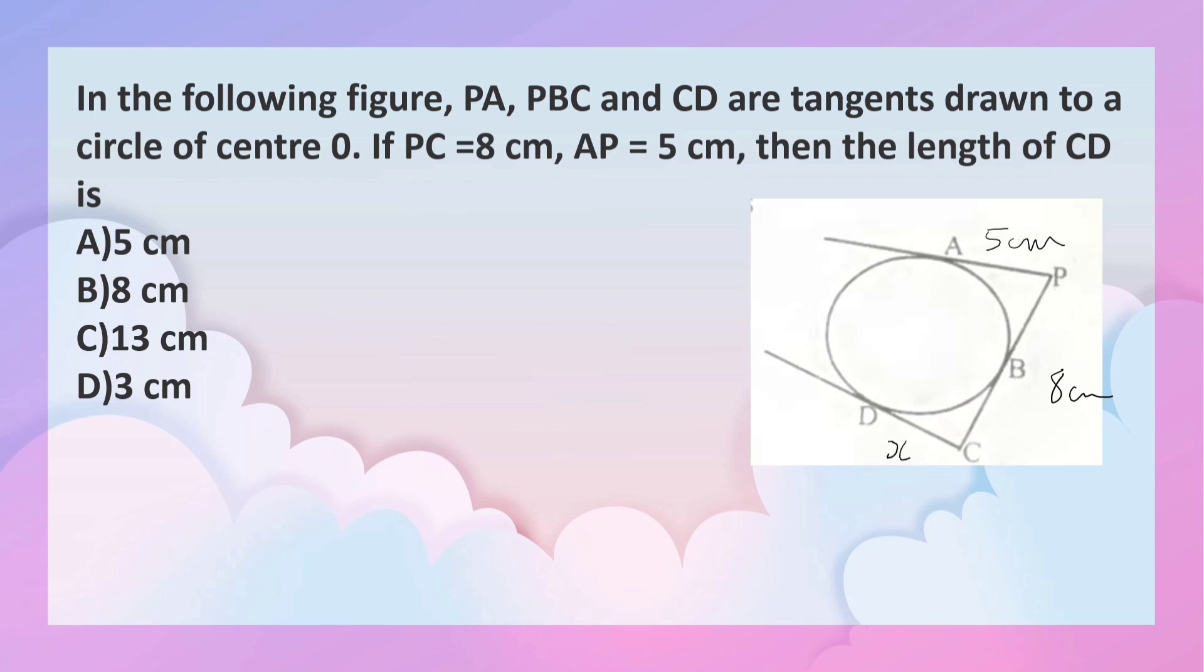Let this be x. If PA is 5 cm, PB is also 5 cm. Why? They are tangents from point P, so they are equal to each other. Similarly, BC is equal to CD, that is x.